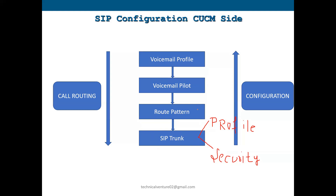For example, if you create a route pattern as 1234, the voicemail pilot number should also be 1234. Then you create a voicemail profile containing the voicemail pilot number so it will route correctly. This completes the configuration on the CUCM side for SIP integration.